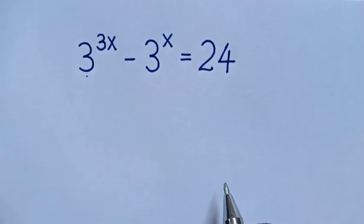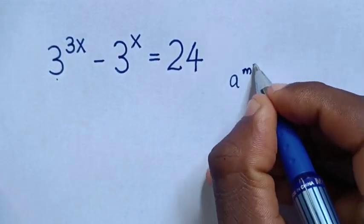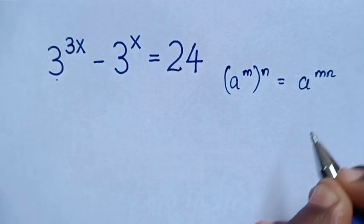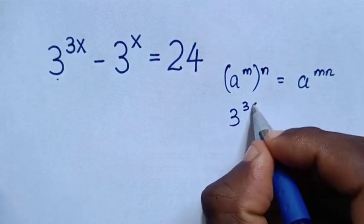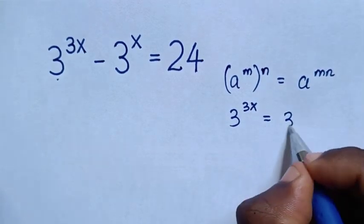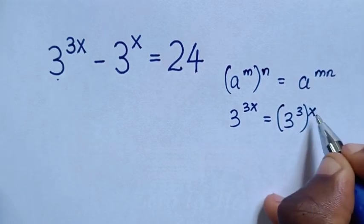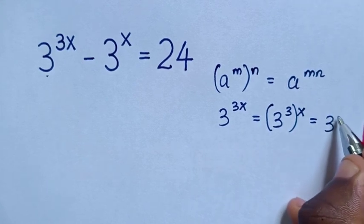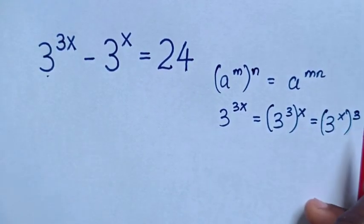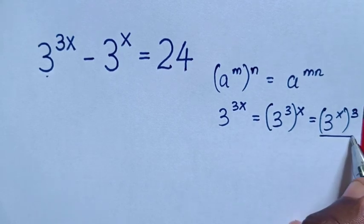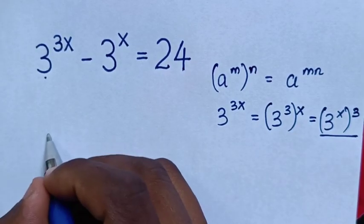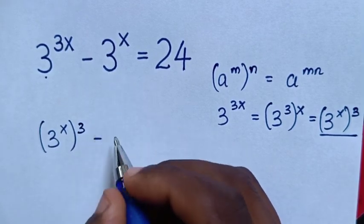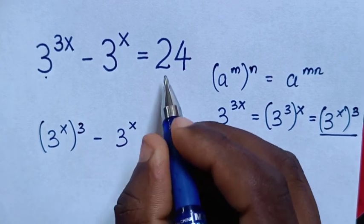Now from here, we'll apply the exponential rule: a power of m, bracket power of n, is equal to a power of mn. Then 3 power of 3x is equal to 3 power of 3, bracket power of x. We exchange the powers, so it will be 3 power of x inside the bracket, power of 3 outside the bracket. Then we substitute this in, so it will be (3^x)^3 minus 3^x is equal to 24.